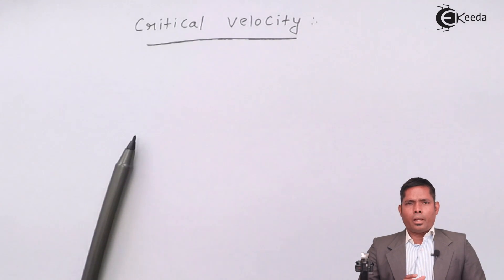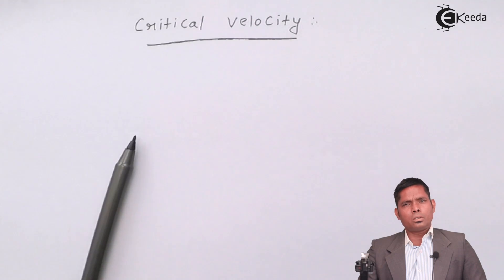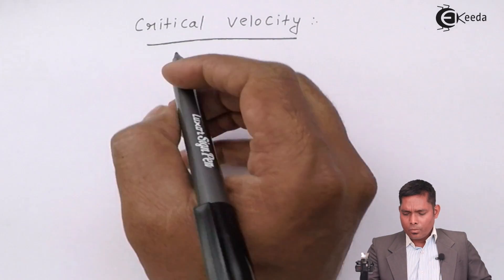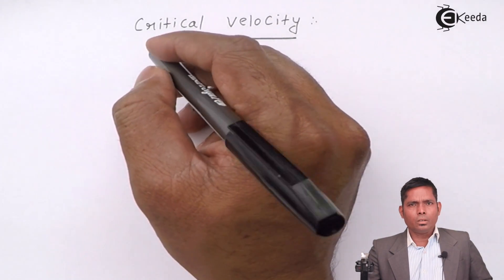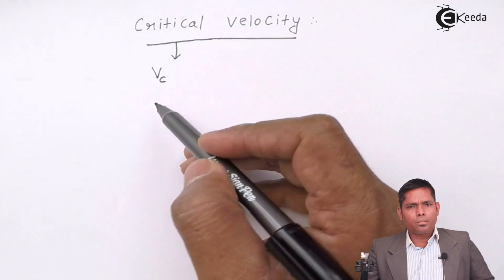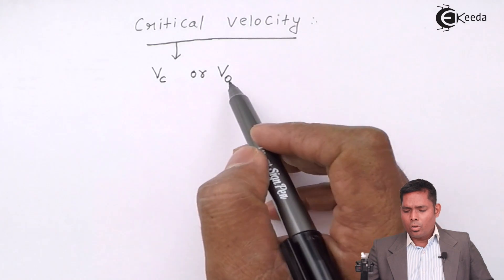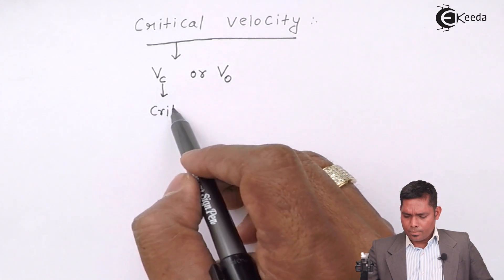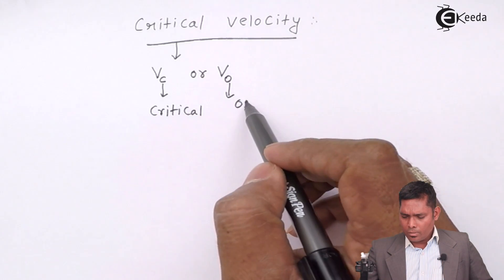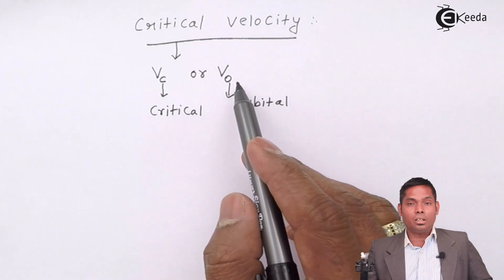If I think of any satellite and I want it to revolve around a particular planet, then I must provide a certain horizontal velocity at the desired height. That minimum value for which there is circular motion around the planet is known as critical velocity. It is represented as V sub C or V sub O, where C stands for critical and O stands for orbital, so it is sometimes called orbital velocity or critical velocity.